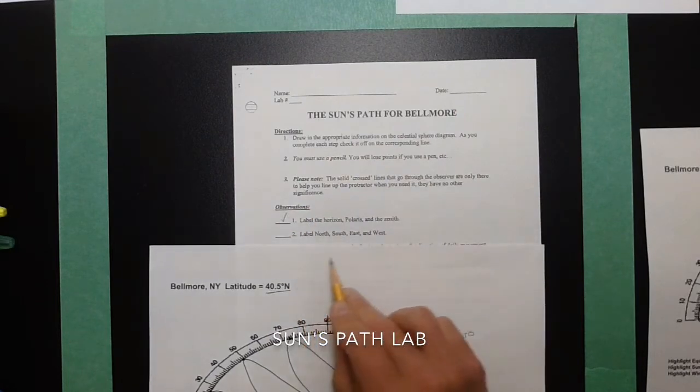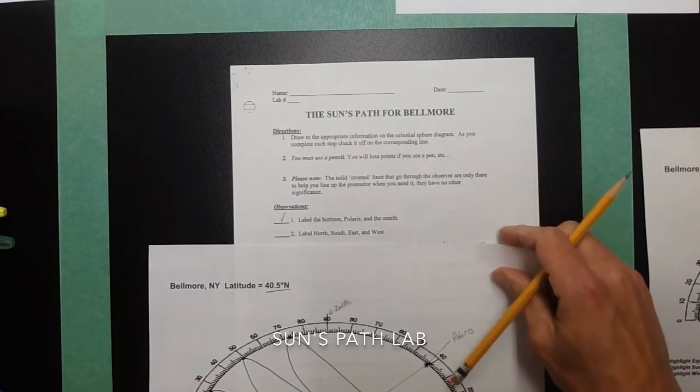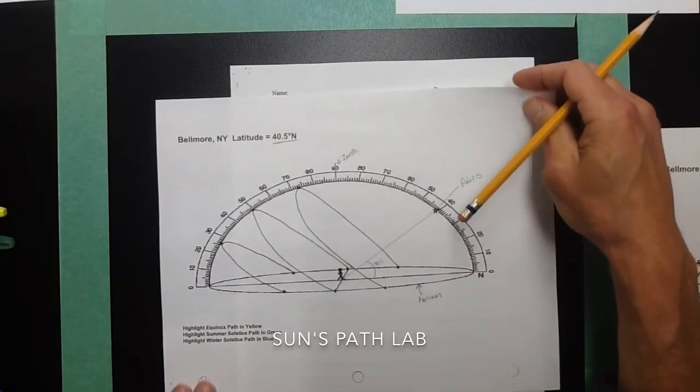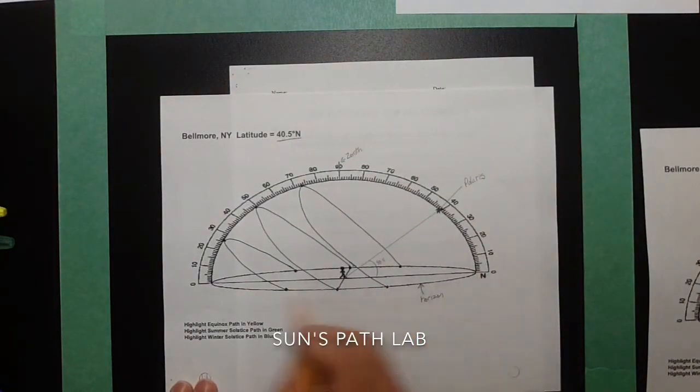Now, label north, south, east, and west. They only gave me north. But when I look at this, here's my diagram. If north is here, south is going to be on the other end.